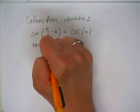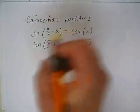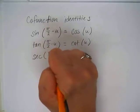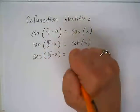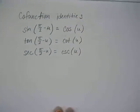So tangent of pi halves minus an angle is the same as the cotangent of that angle. Secant of 90 minus an angle is the same as the cosecant of that angle.